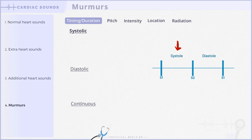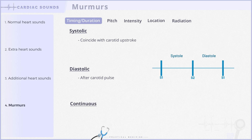Systolic murmurs happen during ventricular systole, between the first and second heart sounds, and coincide with the carotid pulse. Diastolic murmurs are heard during diastole, after the second heart sound and before the first heart sound, just after the carotid pulse upstroke. Continuous murmurs are heard throughout the cardiac cycle. While not typically originating from the heart, they are included here for completeness — examples include patent ductus arteriosus and murmurs audible over an arteriovenous fistula.